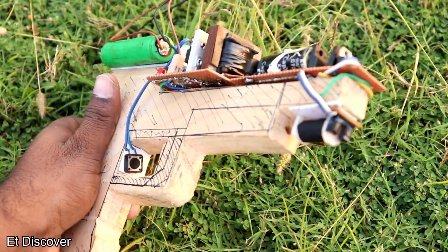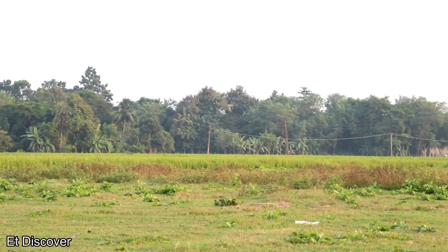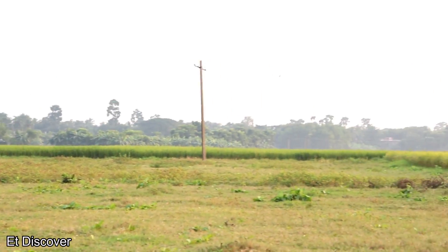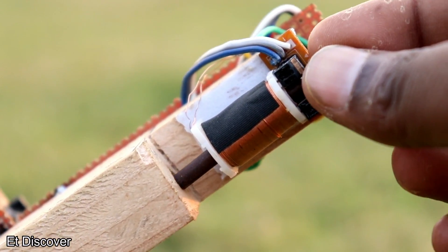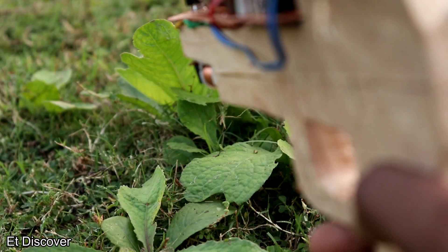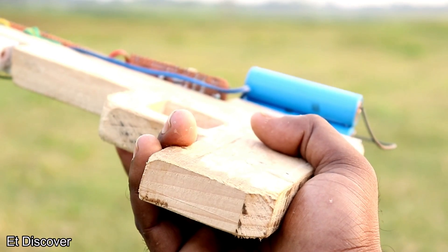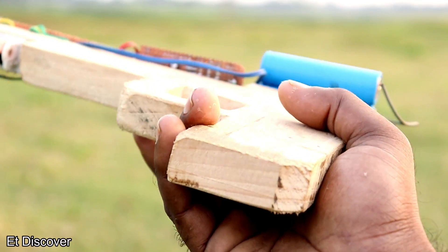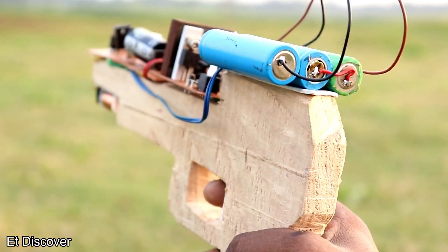After completing this toy coil gun and bullet, now it's time to check. That's why I go outside. I put the bullet in the gun, charge the capacitor, and fire. This is awesome, right? And now it looks very nice to see it.